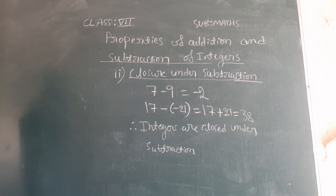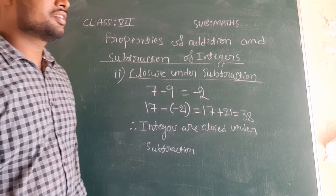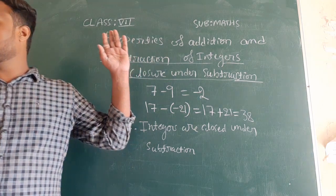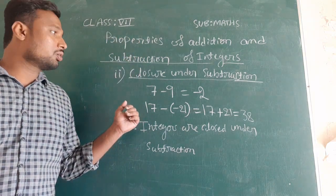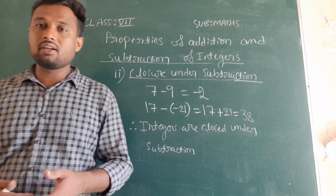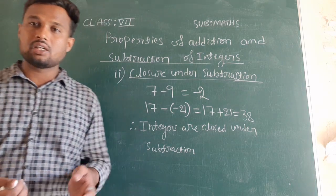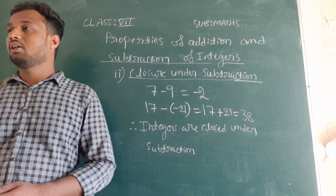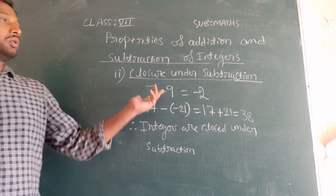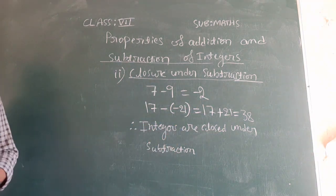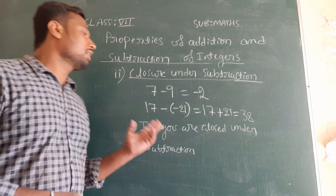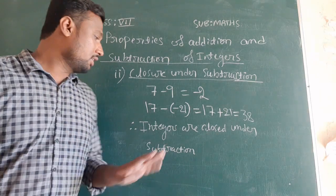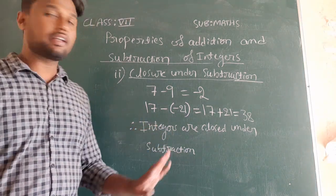Remember: for closure property of integers, they are closed under addition and closed under subtraction also. The meaning of closure property is: when you add two integers or subtract two integers, the answer should be an integer only. Therefore, integers are closed under addition and integers are closed under subtraction.